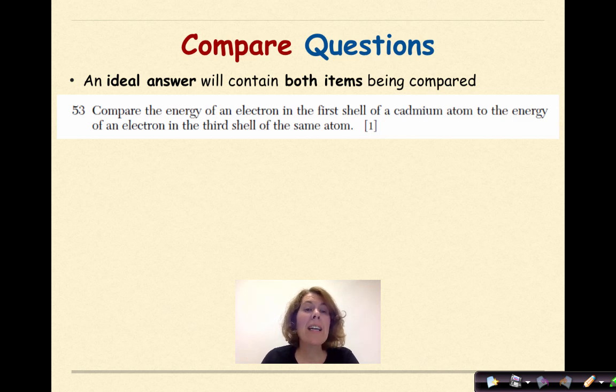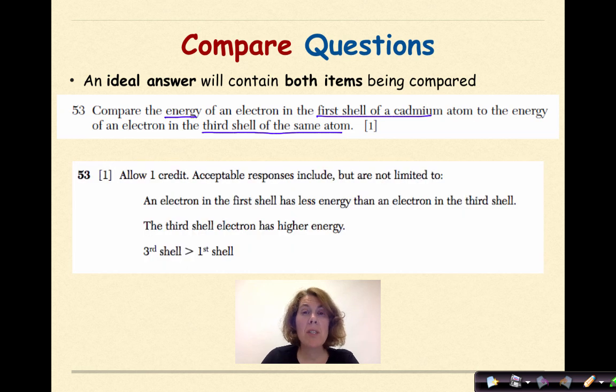Compare question. An ideal answer for a compare question will contain both items being compared. Let's look at an example. Compare the energy of an electron in the first shell of a cadmium atom to the energy of an electron in the third shell of the same atom. Here's the accepted responses but are not limited to. But there could be other answers accepted by the people grading your test. So an electron in the first shell has less energy than an electron in the third shell. So you'll notice in this answer, they're mentioning both the electrons in the first shell and the third shell and the second answer states, the third shell electron has higher energy.